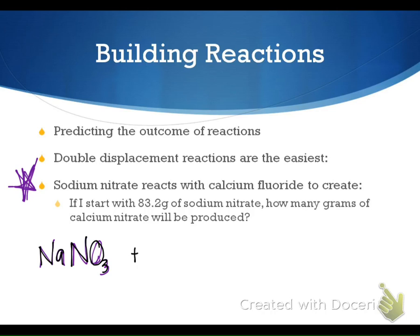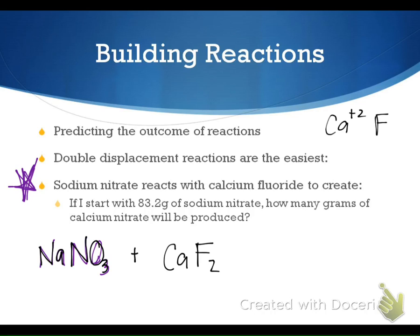Calcium fluoride is our second reactant — CaF₂. When we balance our equations, calcium is a plus two and fluorine is a minus one. We cross down the charges, which means we get CaF₂. Diatomics don't make any difference when they're bonded with another element. Diatomics are only two when they're by themselves in elemental form.